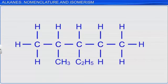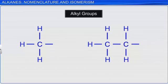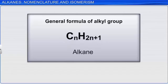We come across many groups like CH₃, C₂H₅, attached to carbon atoms. These groups are derived by removing one hydrogen atom from alkanes, and are known as alkyl groups. Their general formula is CₙH₂ₙ₊₁. The name of the alkyl group is derived from the name of the parent alkane by replacing the suffix '-ane' of alkane with '-yl.'